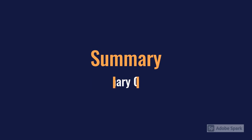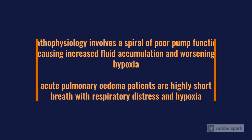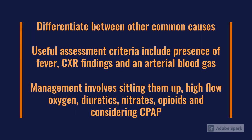To summarize pulmonary edema: the pathophysiology relates to a spiral of poor pump function causing increased fluid accumulation and worsening hypoxia. In terms of presentation, remember these patients — certainly in flash pulmonary edema — will be highly short of breath, sweaty and pale with evidence of respiratory distress and hypoxia. Useful clinical features to differentiate include fever, chest X-ray, and arterial blood gas which typically shows type 1 respiratory failure. Management includes an ABCDE approach, sitting the patient bolt upright, high flow oxygen, furosemide, nitrates, opiates and CPAP.